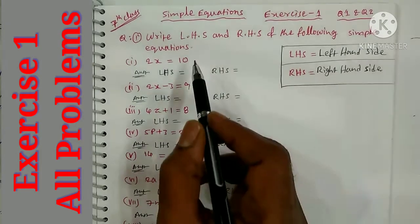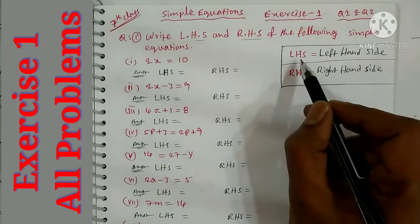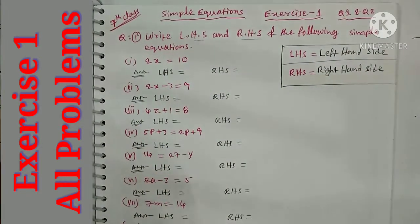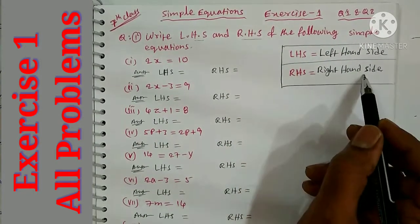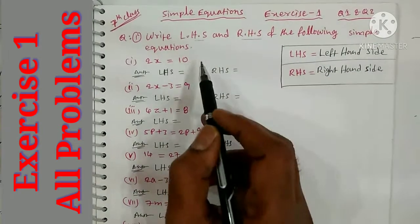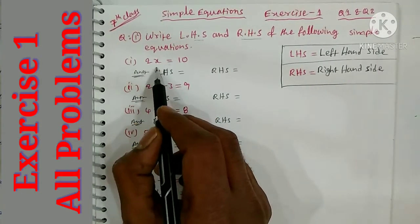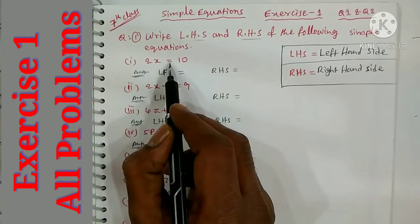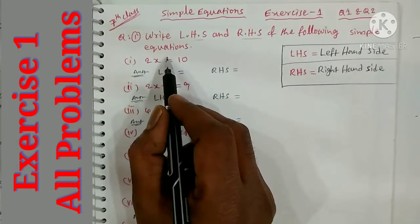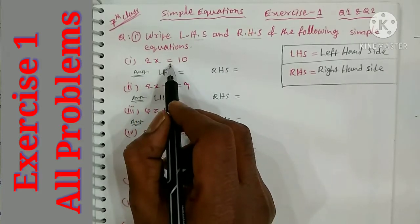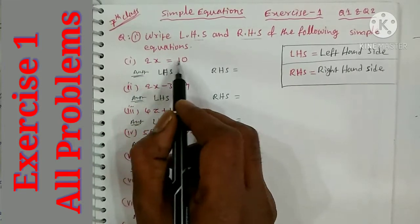We have two terms: LHS and RHS. LHS is Left Hand Side and RHS is Right Hand Side. In an equation, LHS is equal to RHS. For example, 2x is equal to 10 — both sides have the same value.